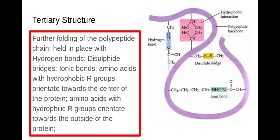The next one is the tertiary structure. I've already had folding in my secondary structure so I've got further folding now in my tertiary structure and this is held in place by hydrogen bonds as I mentioned before between a slightly positive hydrogen and a slightly negative oxygen of different R groups. I've got disulfide bridges which occur between two sulfurs in different amino acids in different R groups and these only occur between cysteines amino acids.